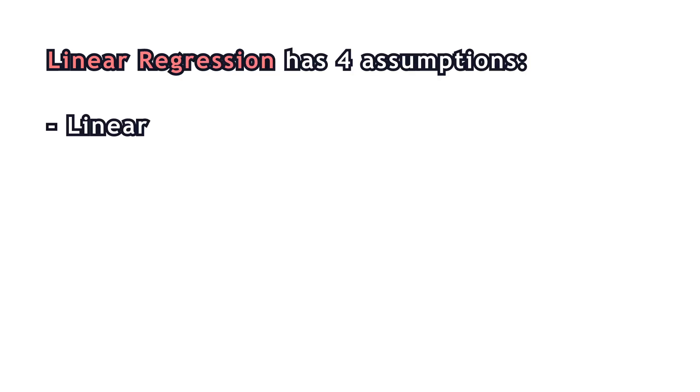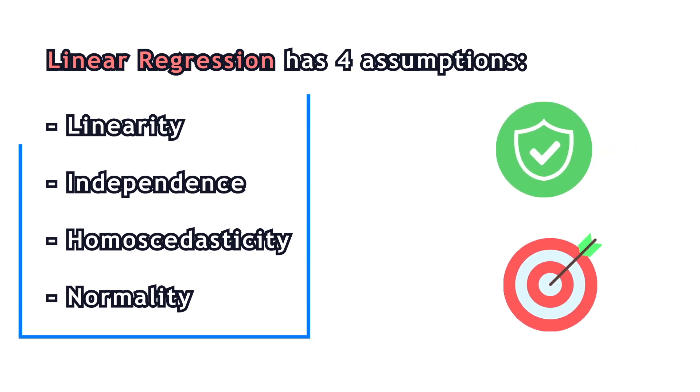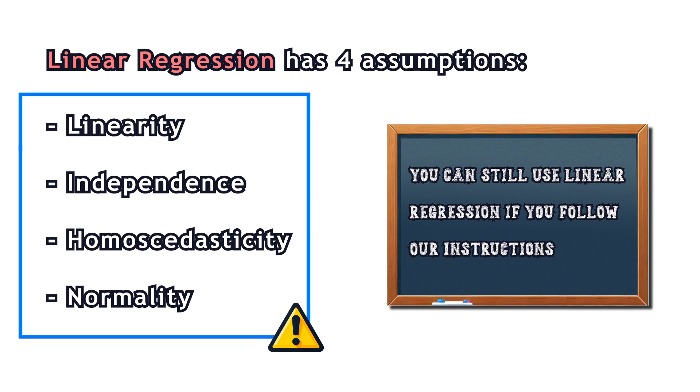Linear regression has four assumptions. The assumptions are important because they ensure the model provides reliable and accurate results. Violation of at least one of the assumptions compromises the model's reliability. However, you can still use linear regression in the case of a violation if you follow our instructions.